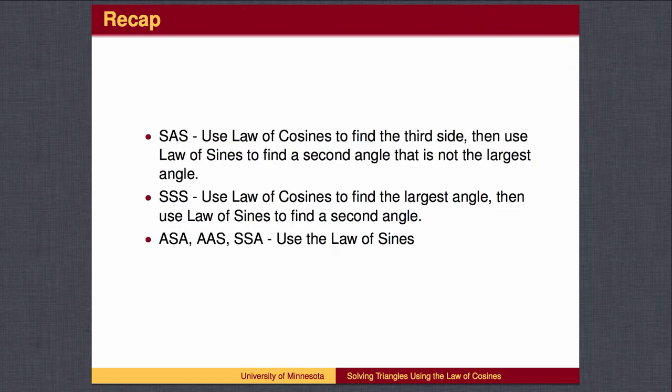To recap, given two sides and the included angle, use the Law of Cosines to find the third side. Then use the Law of Sines to find a second angle. Do not try to find the angle across from the longest side. Then find the third angle by adding to 180 degrees.